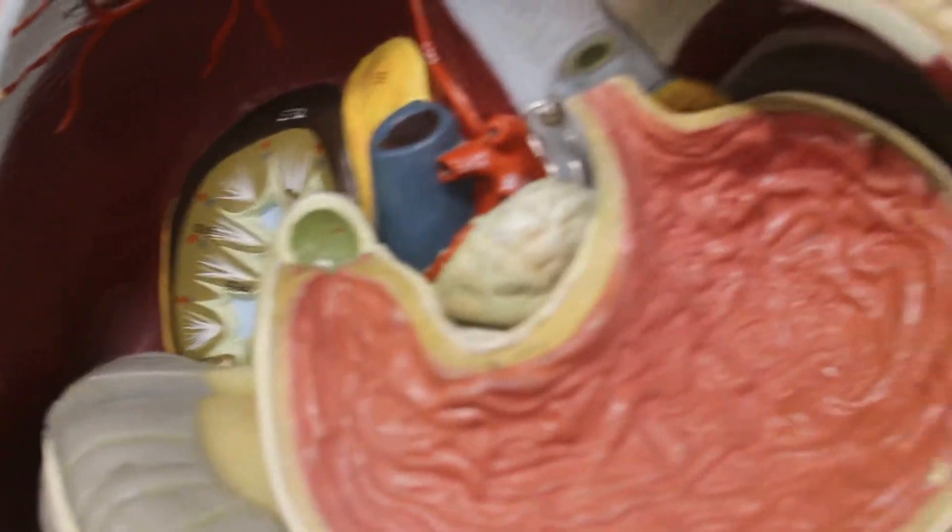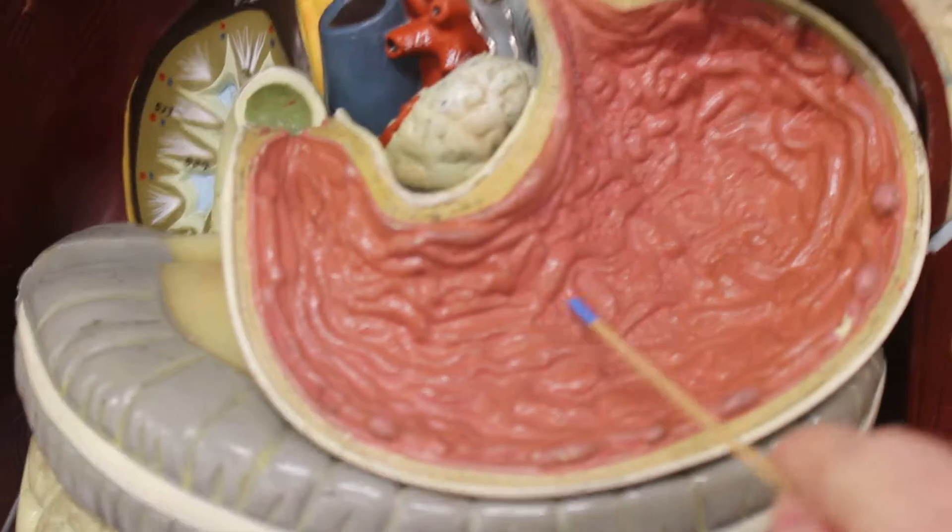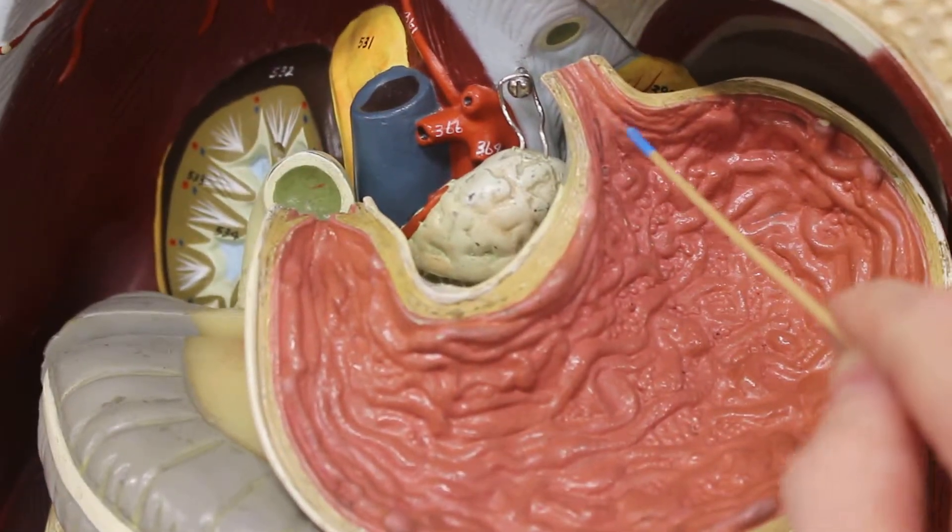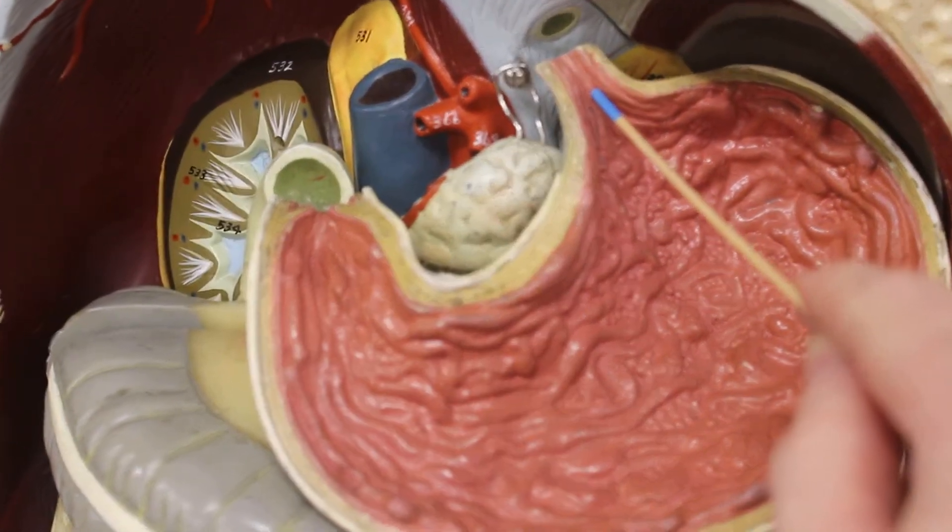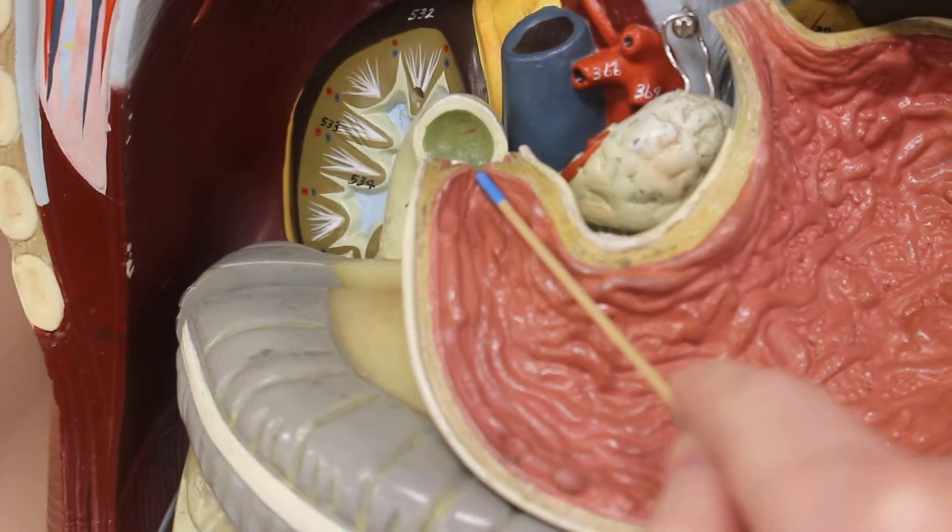We open it up. All these ridges in here are the rugae. We have the lower esophageal sphincter here and the pyloric sphincter here.